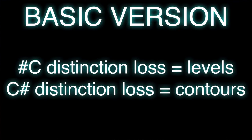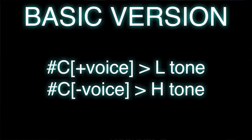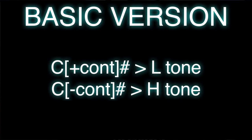Now the much more common way of getting tones in a language is losing some sort of a consonantal distinction either at the beginning or the end of a syllable, with that distinction being reified via tone over the vowel. The basic rule is: if you lose a distinction at the beginning of a syllable, it leads to a tone level; if you lose the distinction at the end of a syllable, it leads to some sort of contour. Losing a voiced consonant at the beginning leads to a low tone; losing a voiceless consonant at the beginning leads to a high tone. At the end of a word, losing a fricative leads to a low tone, and losing a stop leads to a high tone.